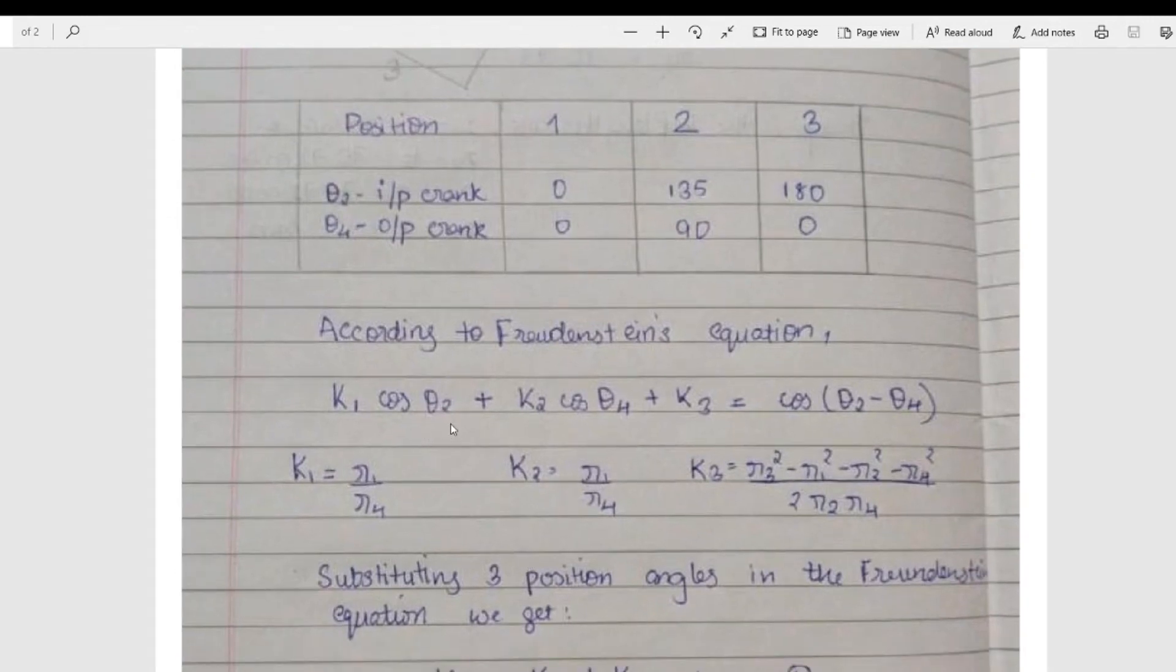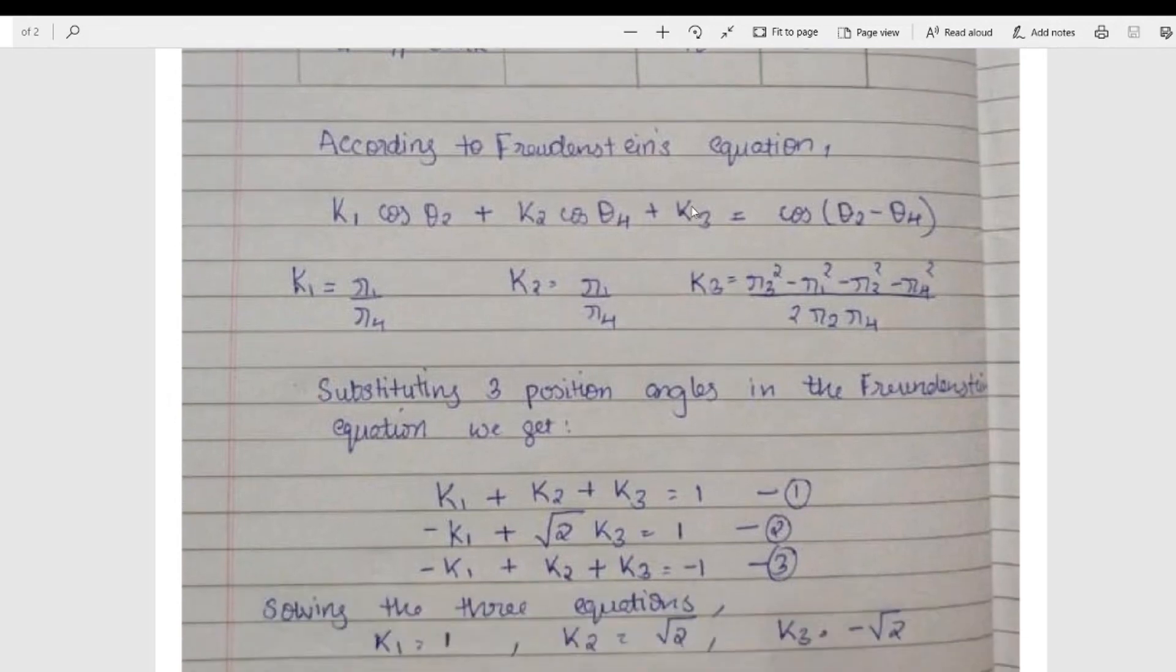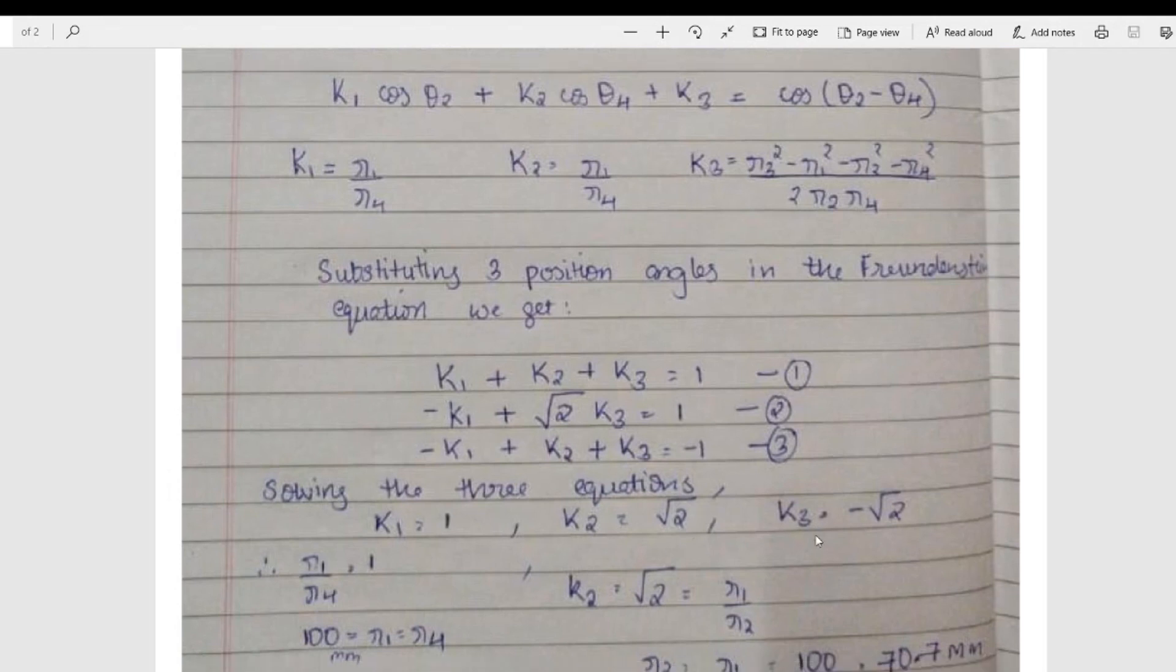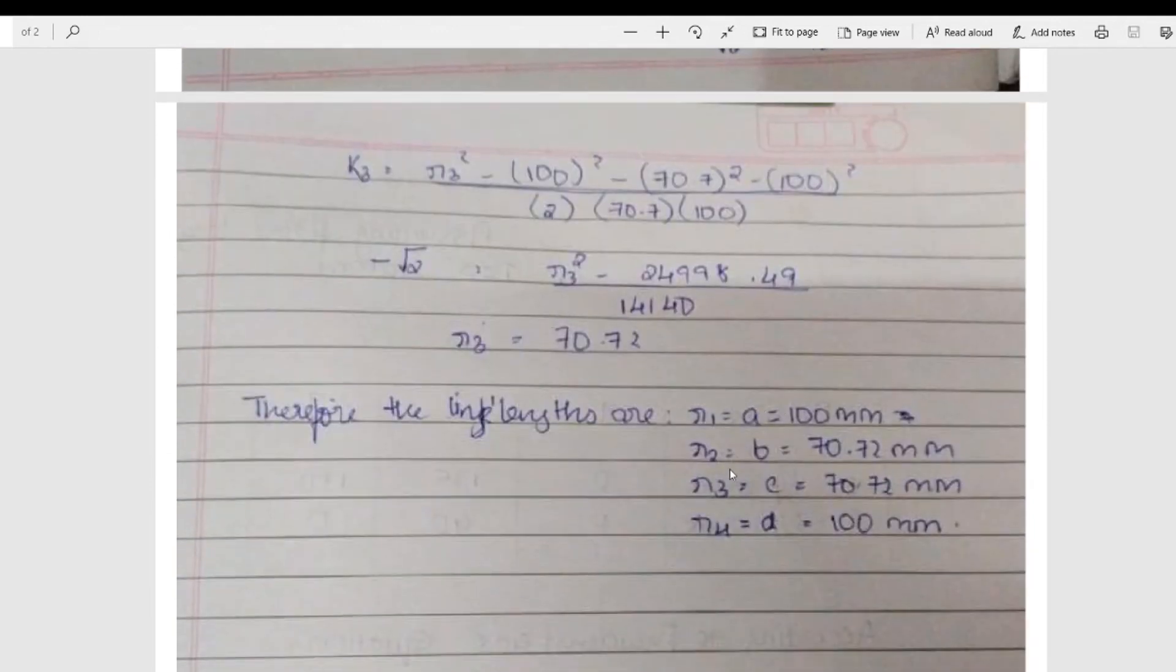The Freudenstein's equation is k1 cos theta two plus k2 cos theta four plus k3 equal to cos of theta two minus theta four. Where the k1, k2 and k3's values are given here. Substituting the three positions in this equation, upon solving it, we get the values of k1, k2 and k3. With that, we get the values of the links that is r1, r2, r3 and r4. Therefore, by looking at these link lengths, we can justify that it satisfies Grashof's rule that is r1 plus r3 equal to r2 plus r4.